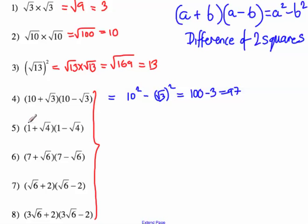Question 5. 1 plus root 4 times 1 minus root 4. A plus b times a minus b. The first number 1 squared, subtract the second number root 4 squared. 1 squared is 1, subtract root 4 squared which is 4. 1 take away 4 is minus 3.